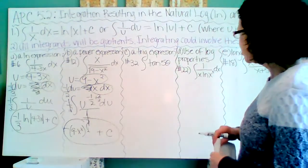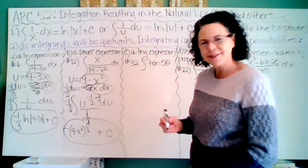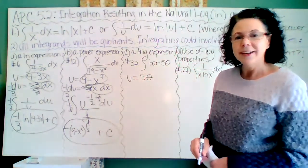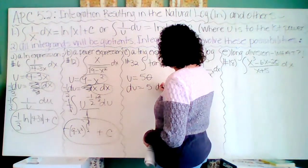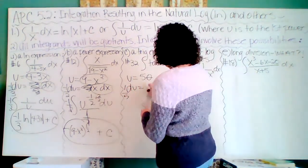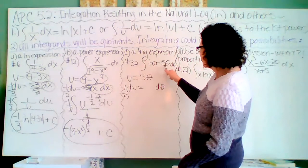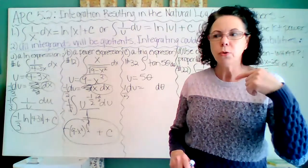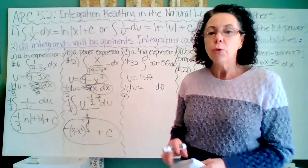Problem 32: integrate tangent of 5θ. It's tempting to let u equal 5θ, but then du is 5 dθ and you'd end up integrating one-fifth tangent of u — and there's no trig function whose derivative is tangent. So that doesn't work. We need a trig identity instead.